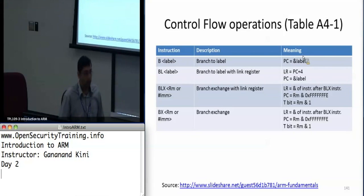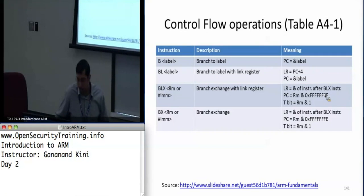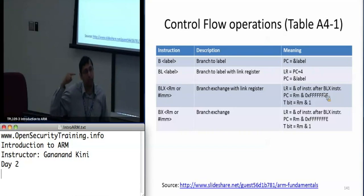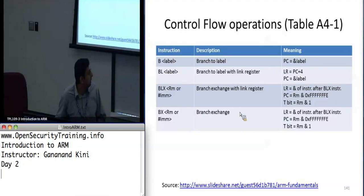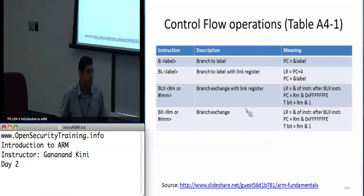The only difference is the link register is going to be pointing to the address after the branch instruction, as opposed to plus 4. The BX also sets the link register, so I don't see a difference there.